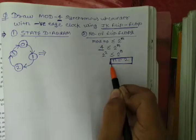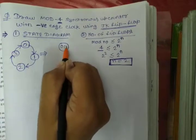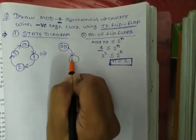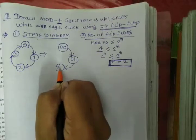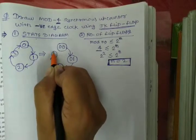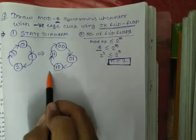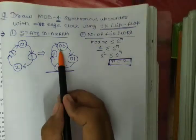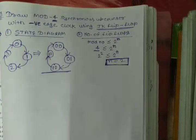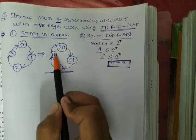The number of flip-flops is 2, and 2 flip-flops will use 2 bits. So the 2-bit representation is: 00 for 0, 01 for 1, 10 for 2, and 11 for 3. Then it moves back to 00. This is the state diagram for mod 4 synchronous up counter, representing values 0, 1, 2, 3.